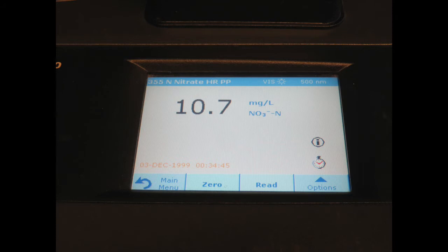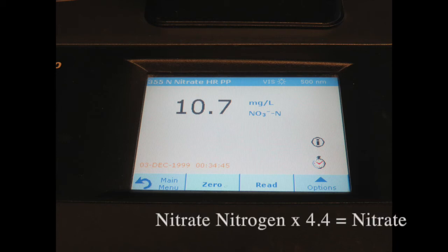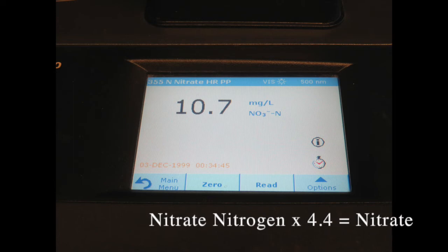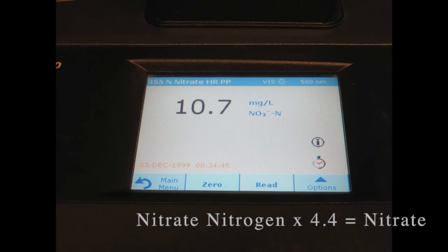The value will be displayed as nitrate nitrogen in milligrams per liter. Our result is 10.7 milligrams per liter. Multiply this result by 4.4 to obtain milligrams per liter of nitrate.